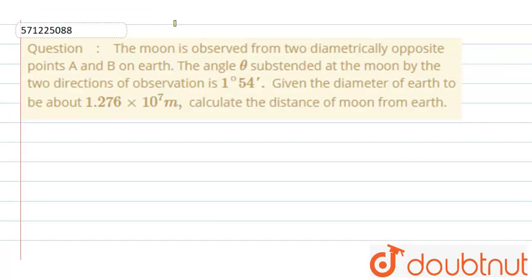Hello friends, so our question is: the moon is observed from two diametrically opposite points A and B on Earth. The angle theta subtended at the moon by the two directions of observation is 1 degree 54 minutes. Given the diameter of Earth to be about 1.276 × 10^7 meters, calculate the distance of the moon from Earth.